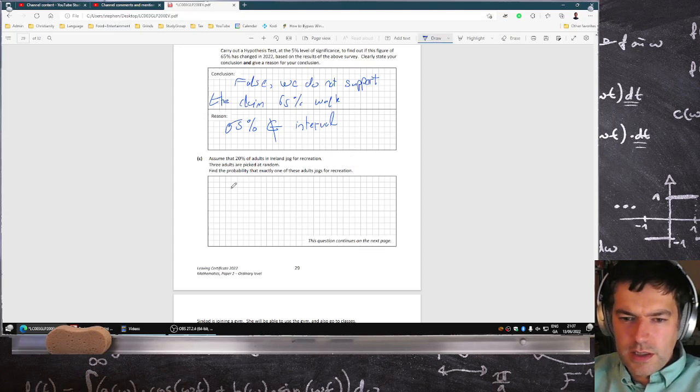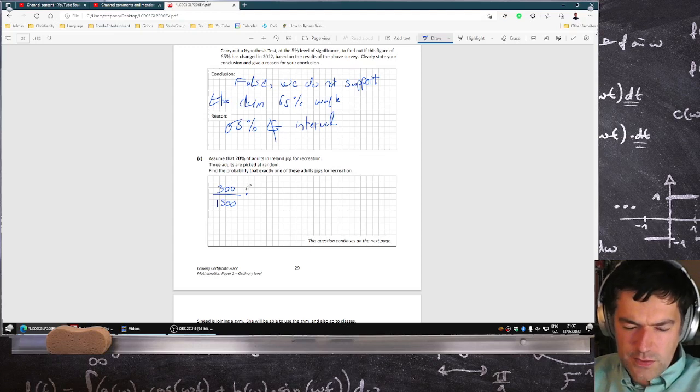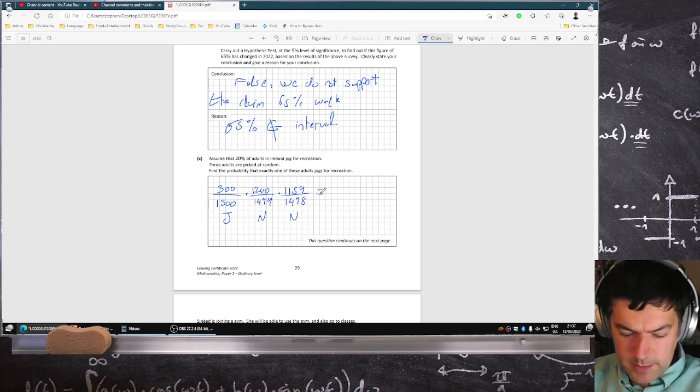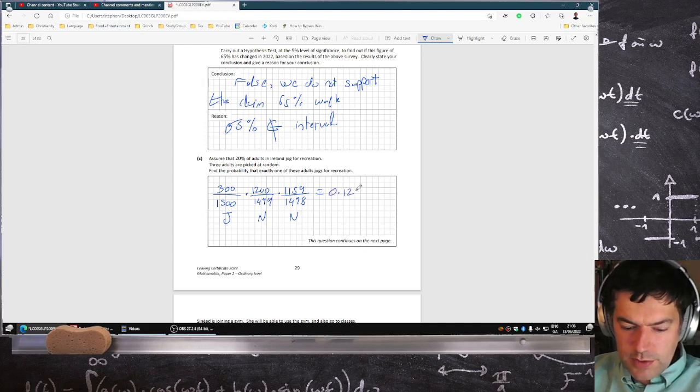Okay, so 300 over 1500, that's a jogger, and then 1200 non-joggers, and then 1199, 1498. So this is the probability of getting a jogger, not, and not. That's 0.1238... but the problem is...